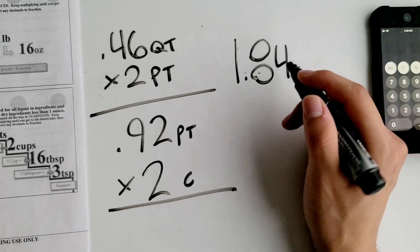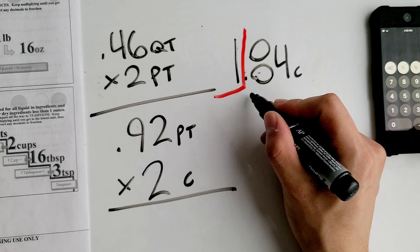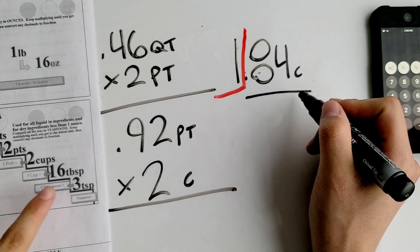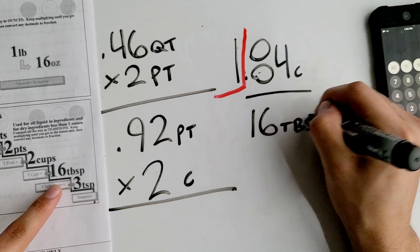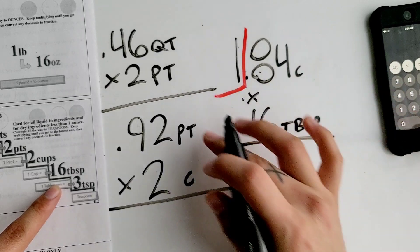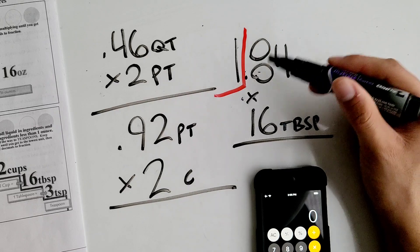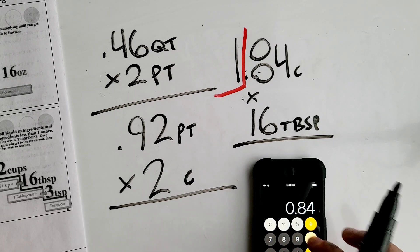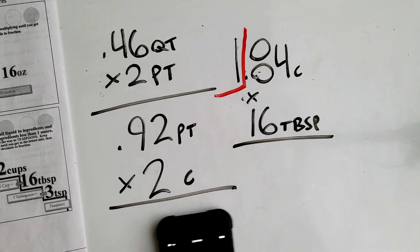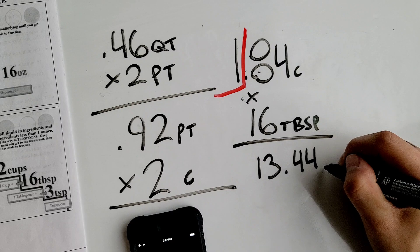We're still not at the lowest unit. Whenever you have a whole number, you block it off. So we block off the 1 cup and continue with the remainder. We multiply 0.84 cups by 16 tablespoons per cup. Since we blocked off the whole number, we only multiply the remainder: 0.84 times 16 equals 13.44 tablespoons.